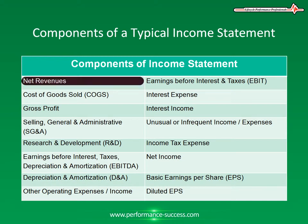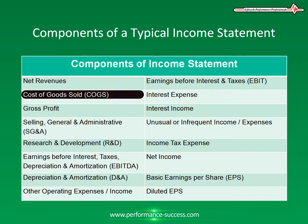Net Revenues. Net revenues are the total dollar payment for goods and services that are credited to an income statement over a particular time period. The next component of income statements is Cost of Goods Sold, or COGS. COGS represents a company's direct cost of manufacture or procurement of a good or service that the company sells to generate revenue.